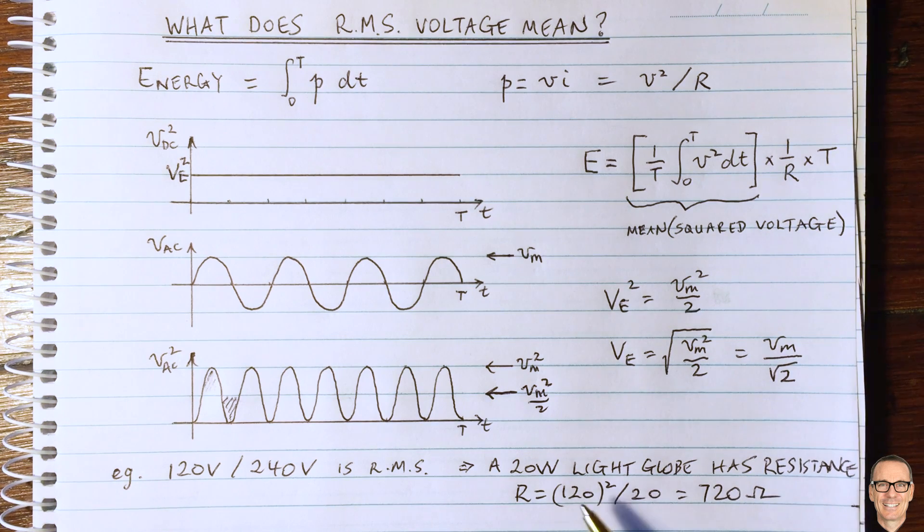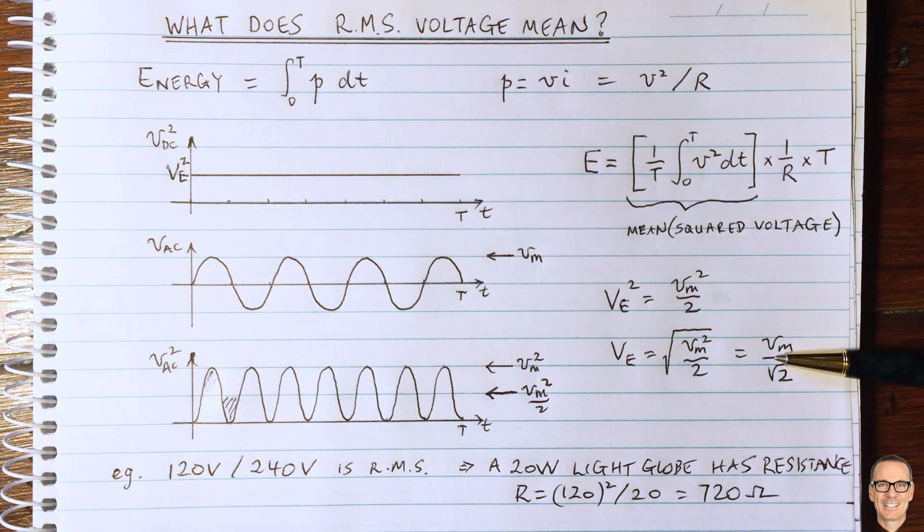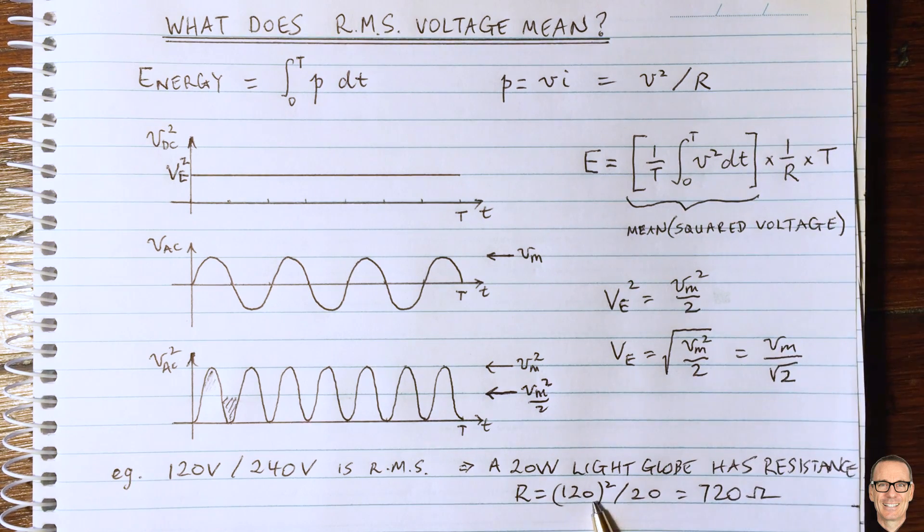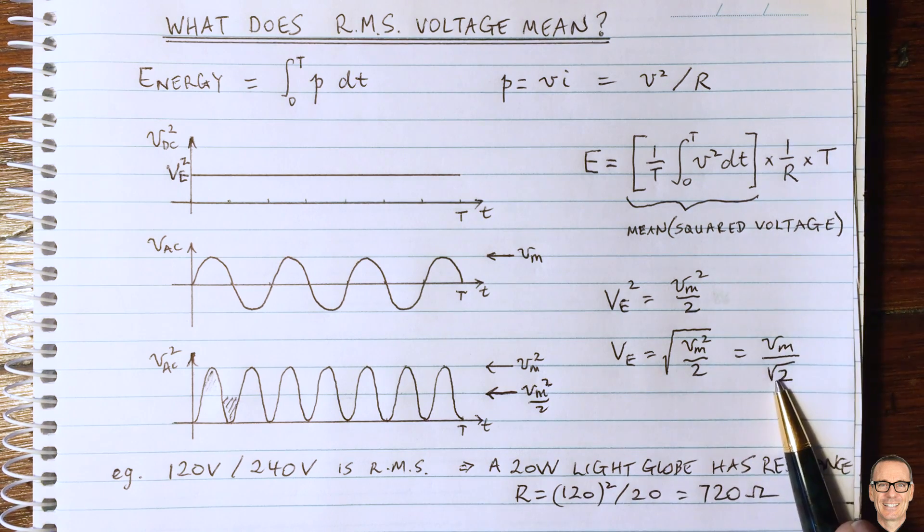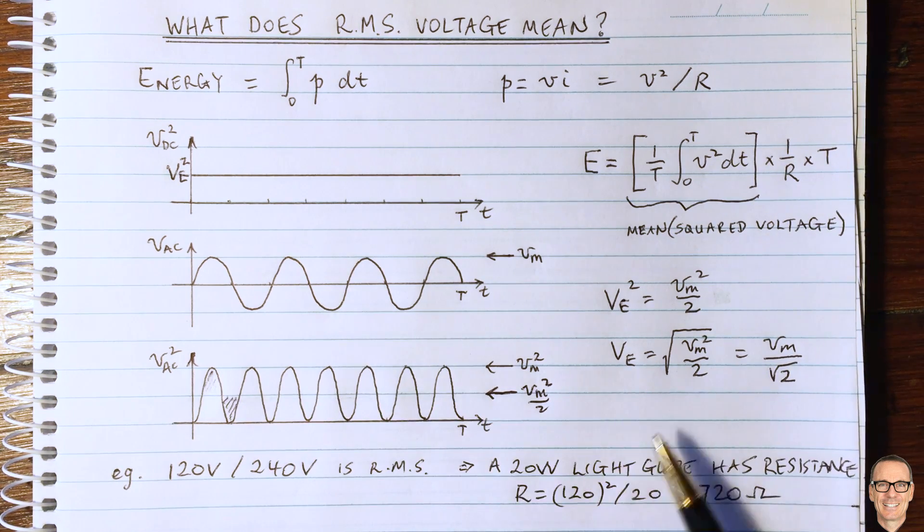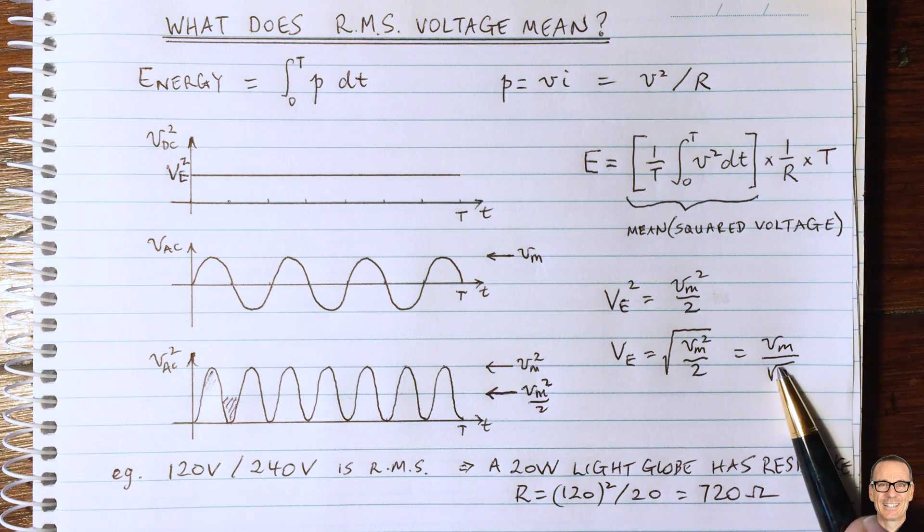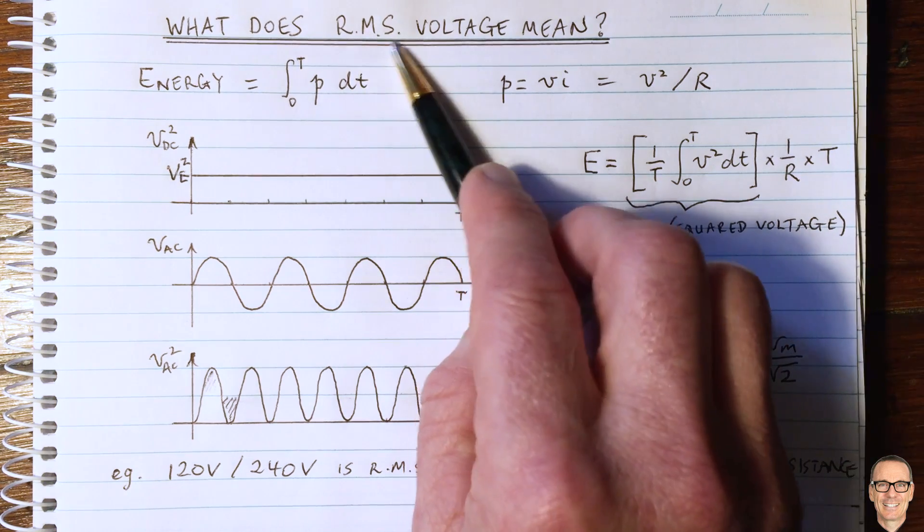Also, you can find out the equivalent RMS current as well. So we've done the RMS voltage here, but there's an equivalent RMS current, exactly found from using the DC equations, V equals IR. So that's a very handy thing and very helpful when you're dealing with AC circuits to be able to use those equations from the DC circuits, and that's the power of RMS.